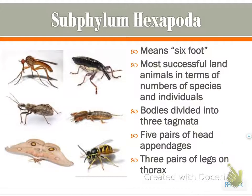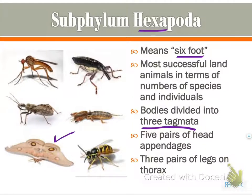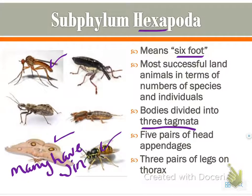Next up is subphylum Hexapoda. Hex means six, so it means six foot. They are the most successful land animals in terms of the number of species and individuals. Their bodies are divided into three tagmata, which are those divisions that all arthropods have. They have five pairs of head appendages and three pairs of legs on the thorax. Many have wings, and one antennae pair.